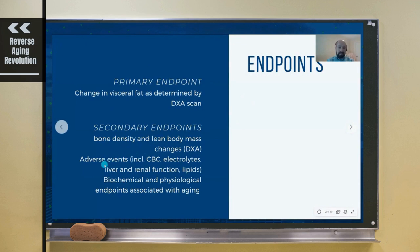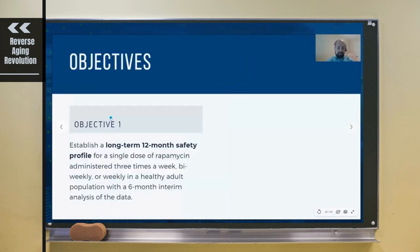One of our objectives is to look at the safety profile of these doses of rapamycin—tease out to see if there's any side effects that stick out, if there's any particular dose that has less or more side effects. We'll also do a six-month interim analysis. If the data looks good at six months, we may actually cut Phase 1 short and move on to Phase 2.